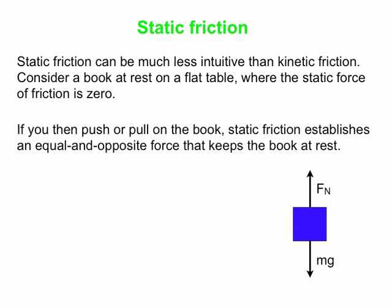Now we're going to push on this book to the right. The static force of friction basically keeps the book at rest. Everything has to balance: the vertical forces cancel each other out — Fn equals mg — and the horizontal forces also have to cancel. So your force F to the right has to be exactly balanced by the static friction force acting to the left. If we take our force away and stop pushing, then there's no reason for the table to exert a friction force. The static friction force acts in the direction that opposes the motion that would occur if there were no friction.